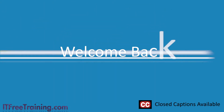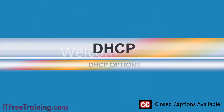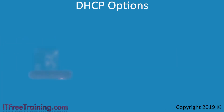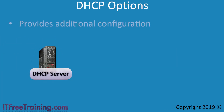In this video from ITFreeTraining, I will look at configuring DHCP options. DHCP options provide additional configuration that is essential for devices to work on the network. A DHCP server can be configured to provide additional configuration for a device on the network. Without additional configuration, the device only has an IP address and subnet mask, not enough configuration to allow it to communicate on the network and find other resources.